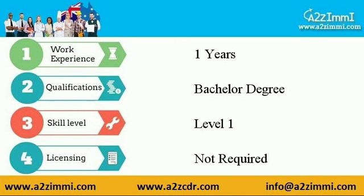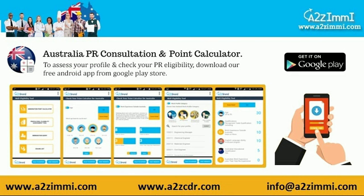The requirements are as follows: work experience required is one year; required qualification is a bachelor's degree; skill level requirement is level one; and licensing for this profile is not required. Australia immigration assessment is a point-based program, and there are a few other eligibility parameters that affect your eligibility points. To do your self-assessment and check your points, go to the description of this video and download our free assessment app.